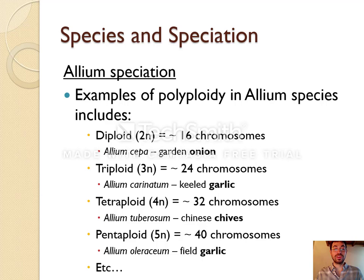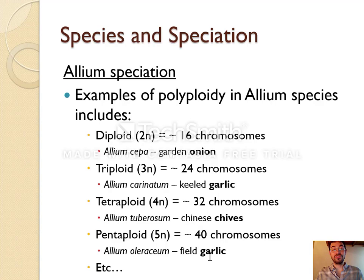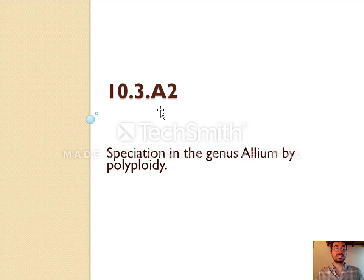For example, onions are a type of plant called allium, which includes garlic, chives, and leeks as well. All these different species cannot breed together because their seeds and pollen have different numbers of chromosomes — they speciated because of non-disjunction events leading to polyploidy, which caused reproductive isolation. The garden onion has 16 chromosomes; triploid gives you garlic, tetraploid gives you chives, pentaploid gives you field garlic, and so on. So it is possible for speciation to occur because of polyploidy, and you have to know what polyploidy means — having more than two sets of chromosomes — and you need to know an example in allium. With that said, we're done with 10.3. Thanks so much and have a great day!